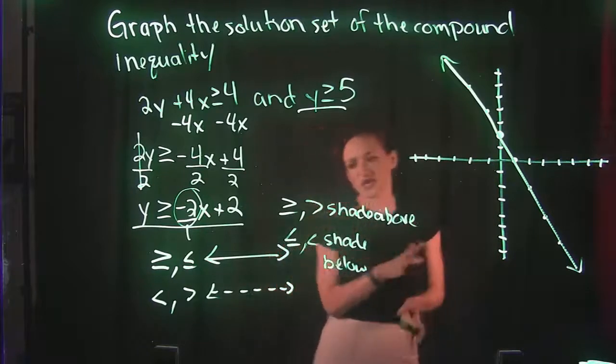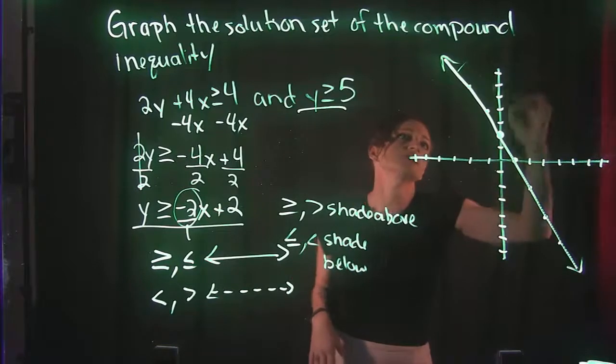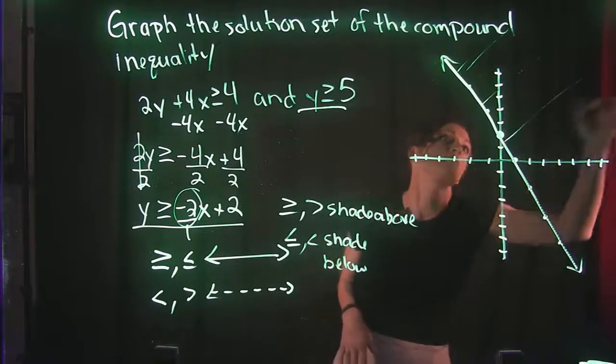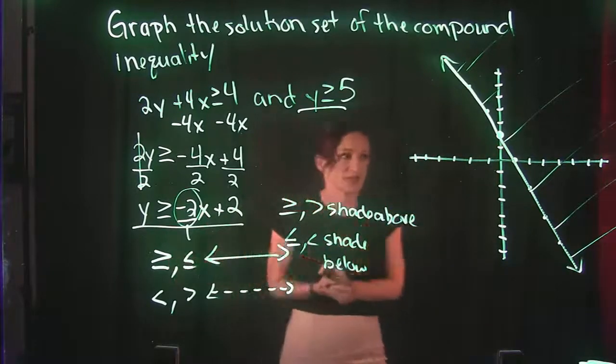Now, I'm going to wait on the shading portion yet. But this does say y is greater than or equal to, which means that we would shade above this line, which is everything in this direction. So I'm not going to fill it in completely here.